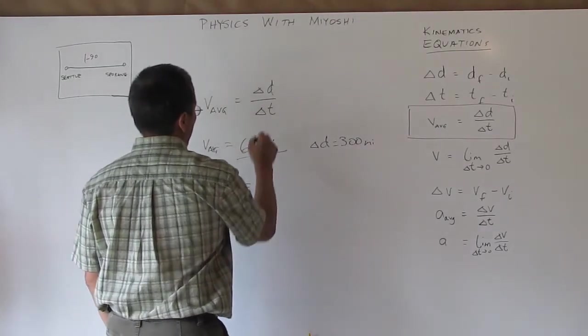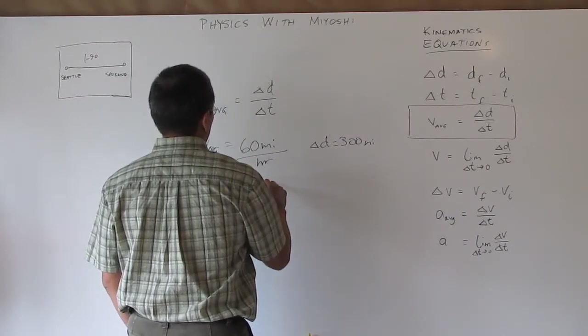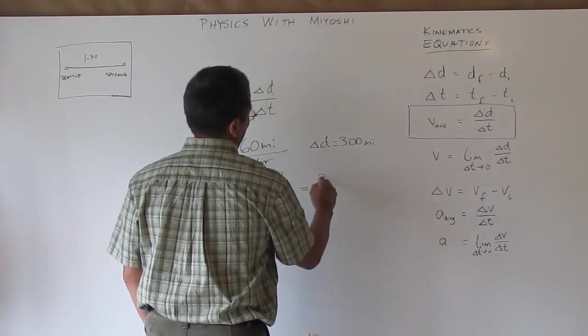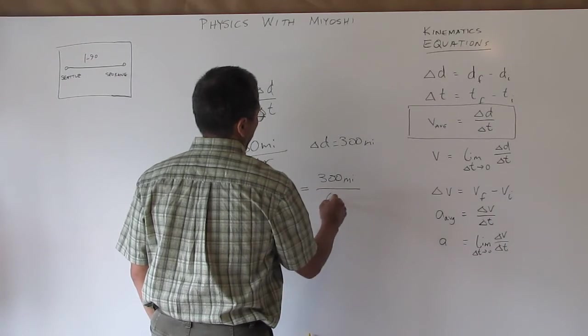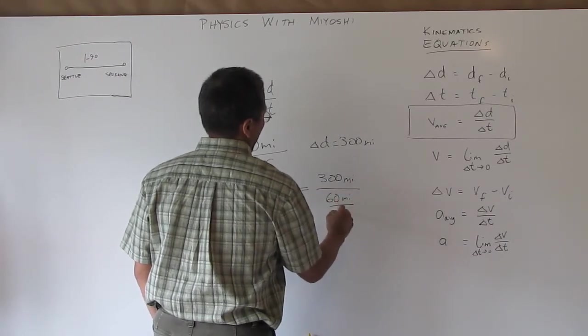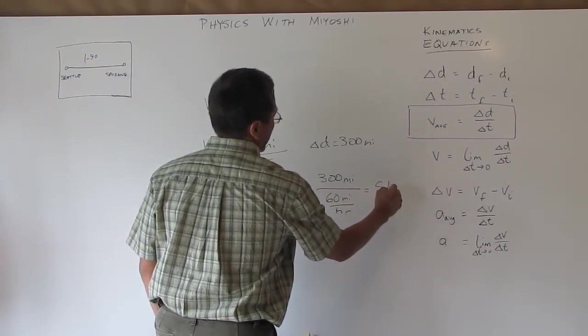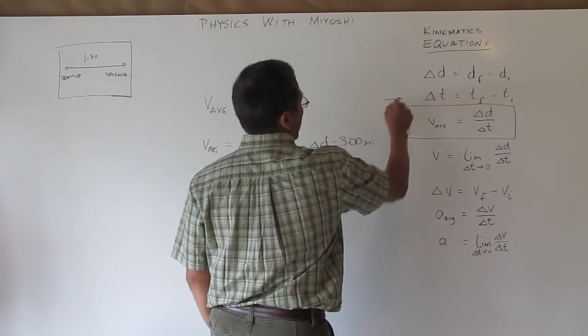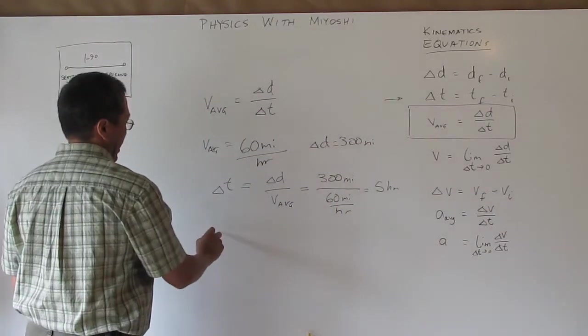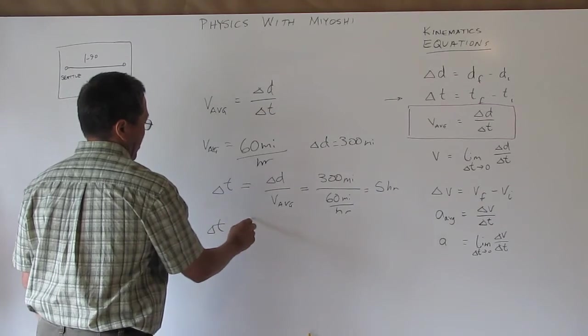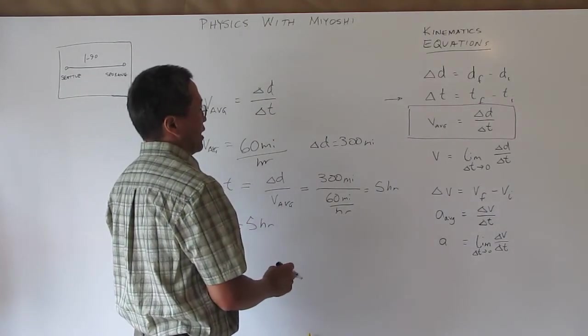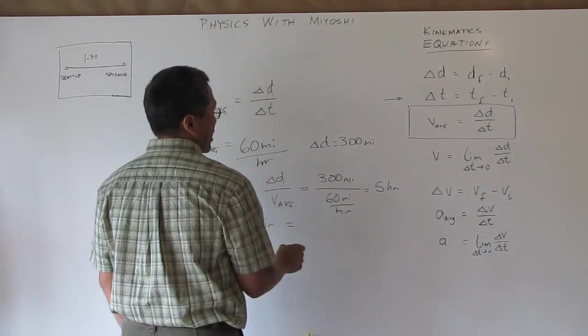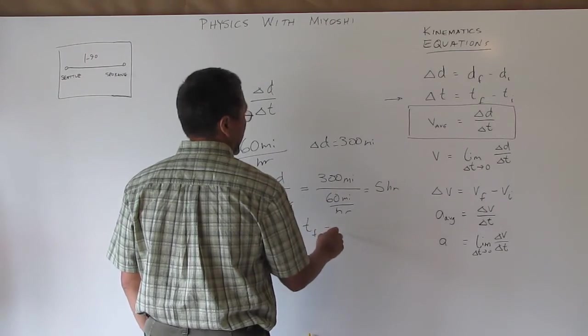And if you recall from before it's delta D over v average which is 300 miles divided by 60 miles per hour which still gives me five hours. But what about the time I'm going to leave? Well I could just use this equation and delta T is five hours but I want to find the initial time so delta T is time final minus time initial.